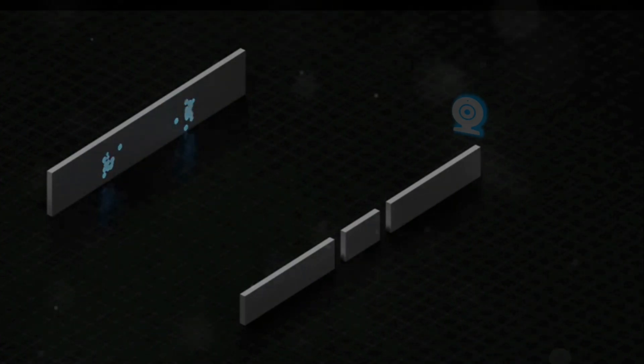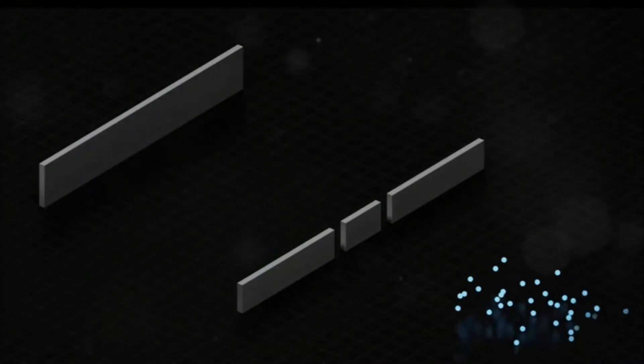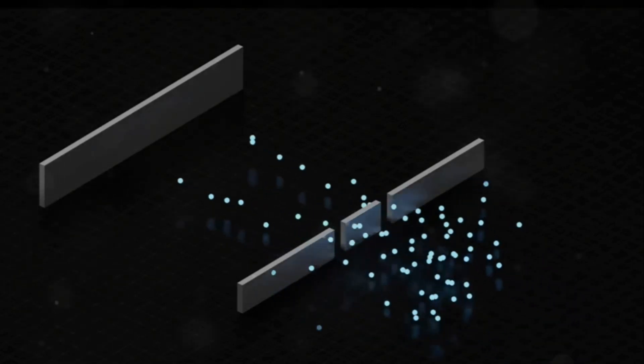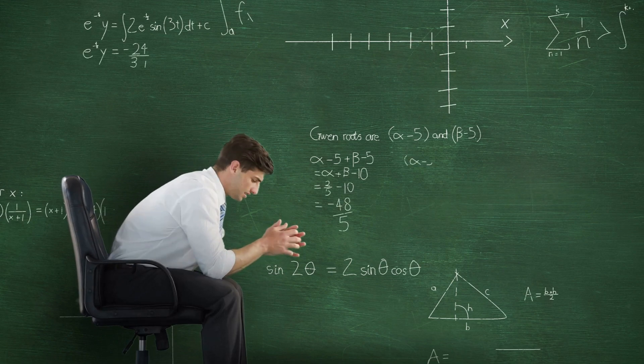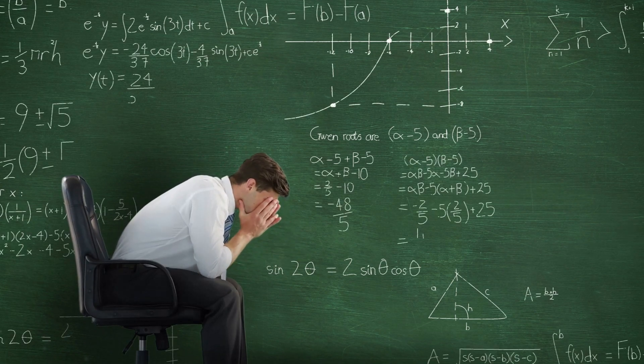Instead of behaving like a wave that could go through both slits at once, the photon now acts like a particle and goes through only one slit. What we're dealing with here are the strange, counterintuitive rules of quantum measurement.